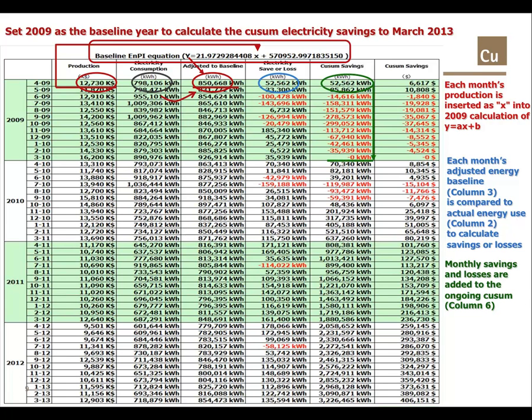The savings or losses for each month are used to calculate a Q-sum saving for the year. Because the 2009 baseline is an average of the savings and losses during the 12 months between April 2009 and March 2010, the Q-sum at the end of March 2010 will, of course, add up to zero. But the addition of savings or losses is continued to create a Q-sum for the entire four-year period to the end of business year 2012 and March 2013.